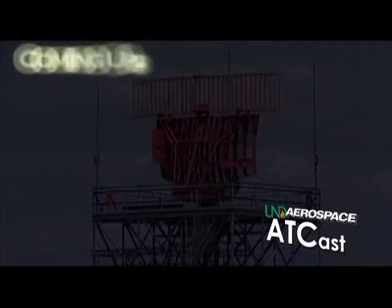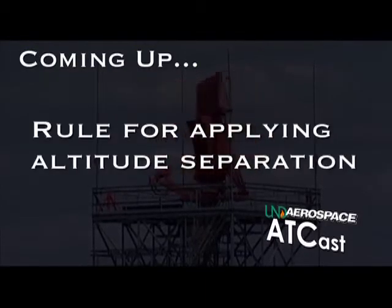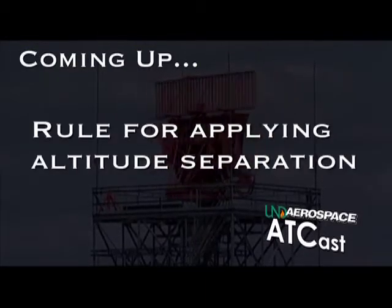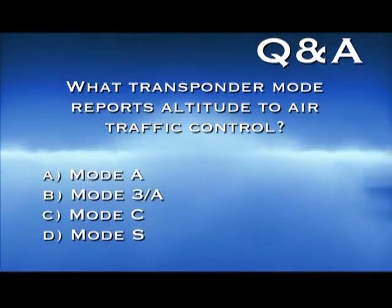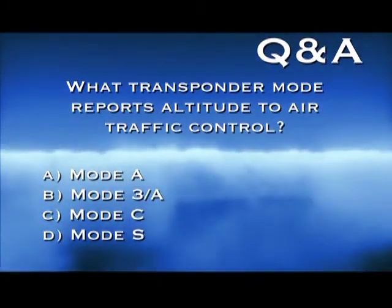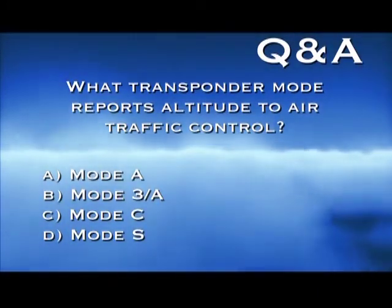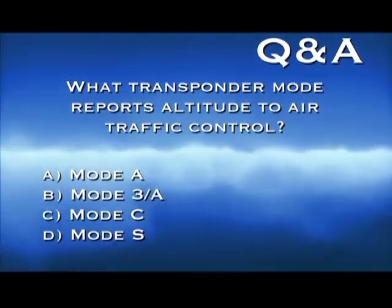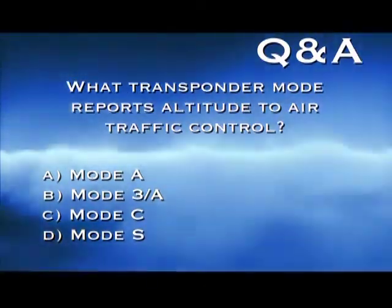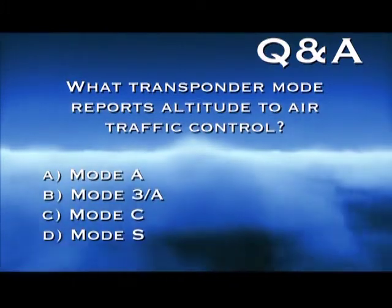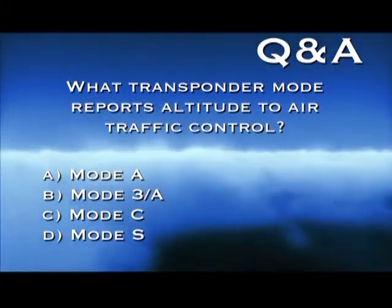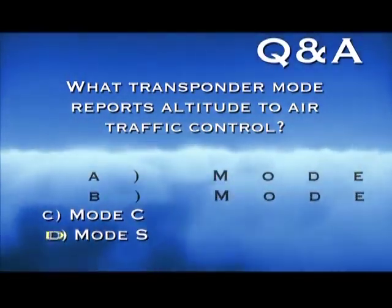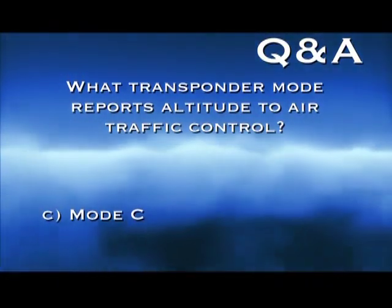What transponder mode reports altitude to air traffic control radar systems? A, Mode A. B, Mode 3A. C, Mode C. Or D, Mode S? The answer is C. Mode C is the function that reports altitude.